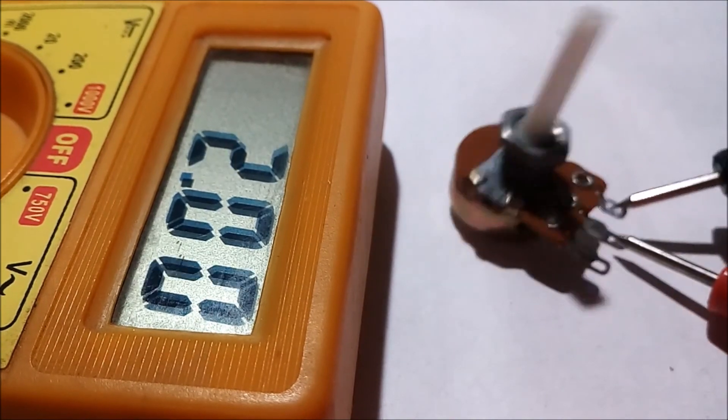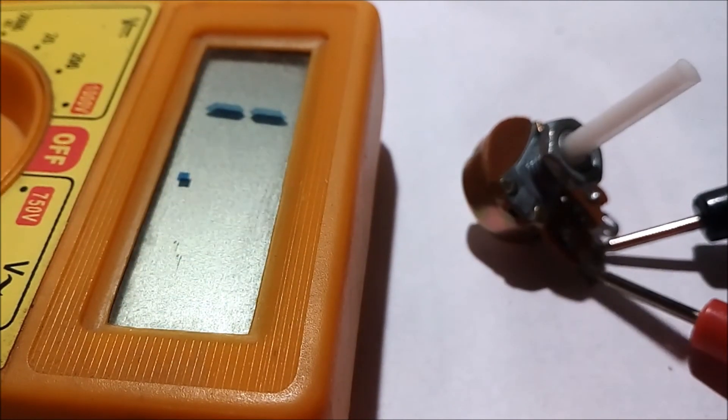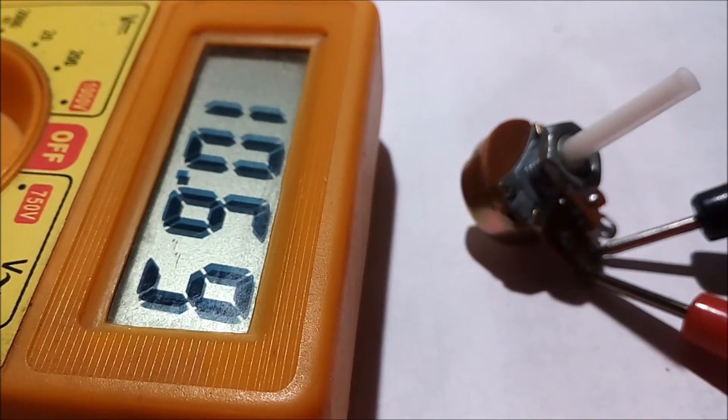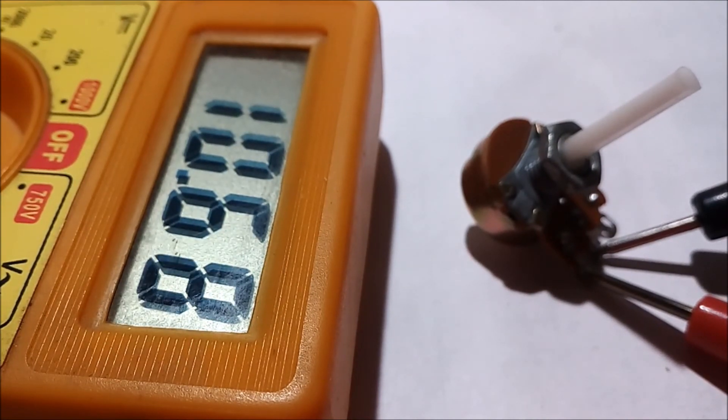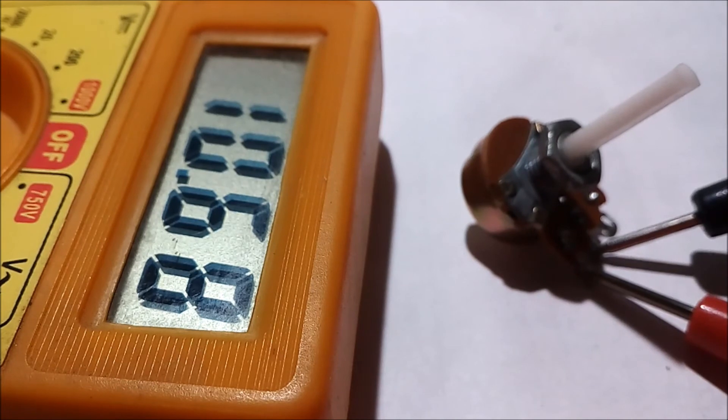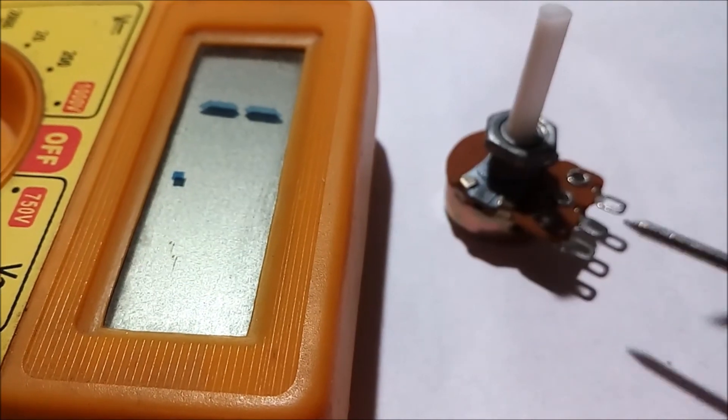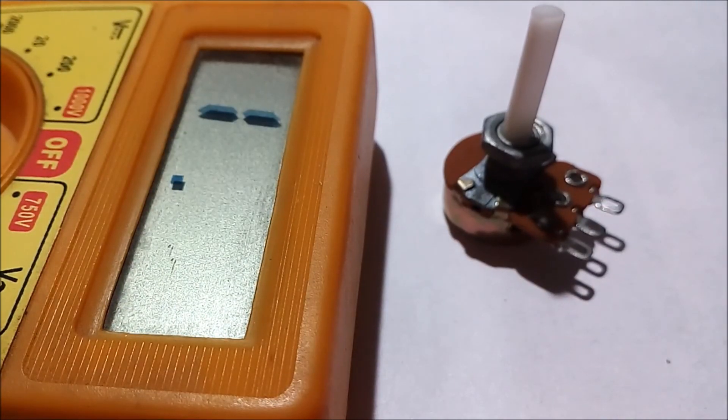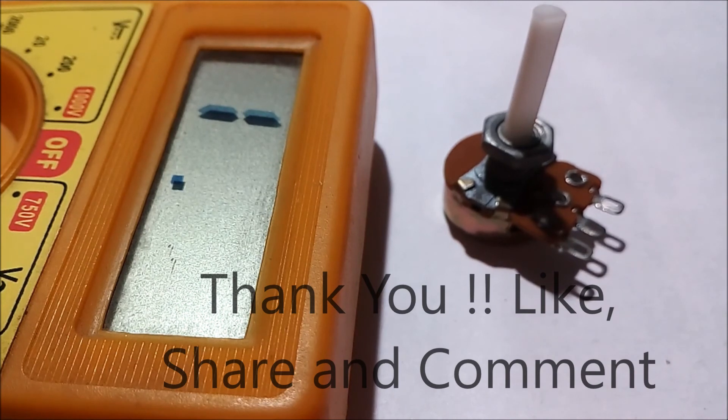Now I am going to touch the other terminal and the ground terminal then it is showing 10.68 kOhm. If one side of the resistor is 0 then the other side will be the highest resistance. And the vice versa of it is also possible.